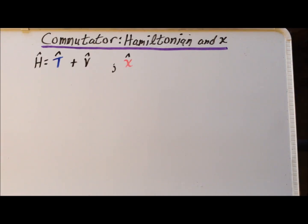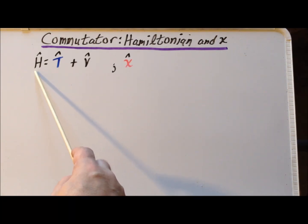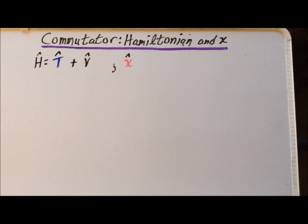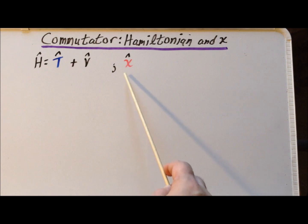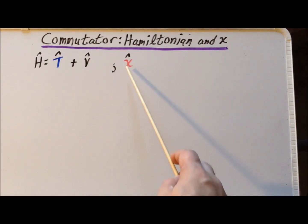This commutator involves two operators. The first is the Hamiltonian, denoted H with a hat on top, which can be thought of as the sum of two other operators: T, the kinetic energy operator, and V, the potential energy operator. The position in the x-direction is governed by the x operator, which we denote as x with a hat on top.